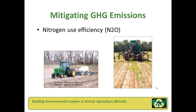Nutrient management plans, or NMPs, are basically a nutrient checkbook where you calculate the nutrient needs — usually focusing on nitrogen and phosphorus — of the planned crop, giving you the total nutrients removed from that field in a given year. From that, you subtract nutrients already in the soil via soil tests, any legume credits if soybeans or alfalfa were grown the previous year, and any manure or compost applications made. The remaining amount tells a farmer how much inorganic or commercial fertilizer to apply. Improving nitrogen use efficiency also reduces greenhouse gas emissions generated during the production of commercial fertilizers.